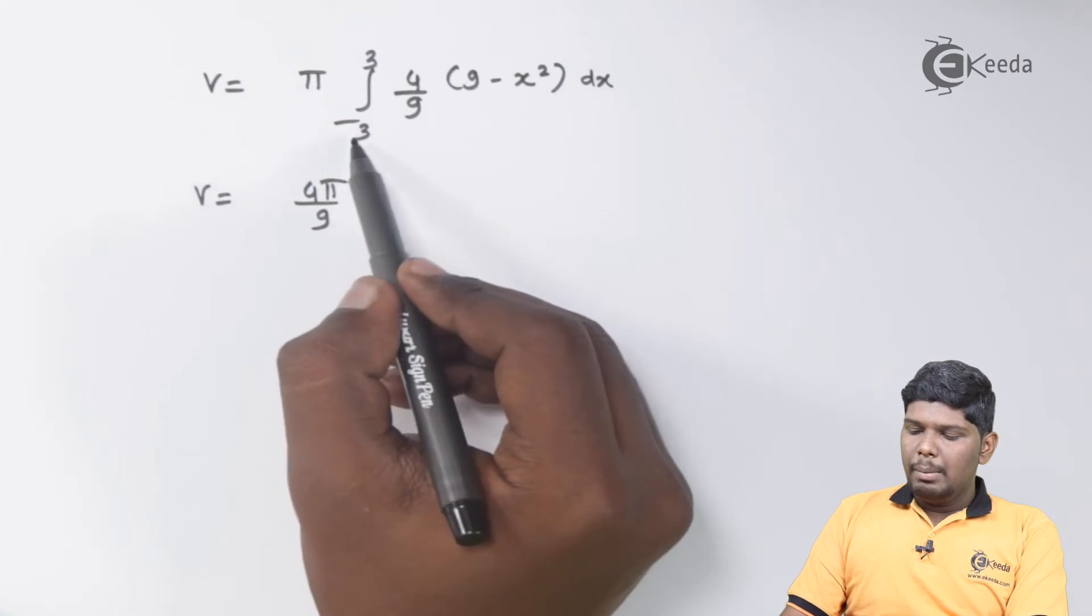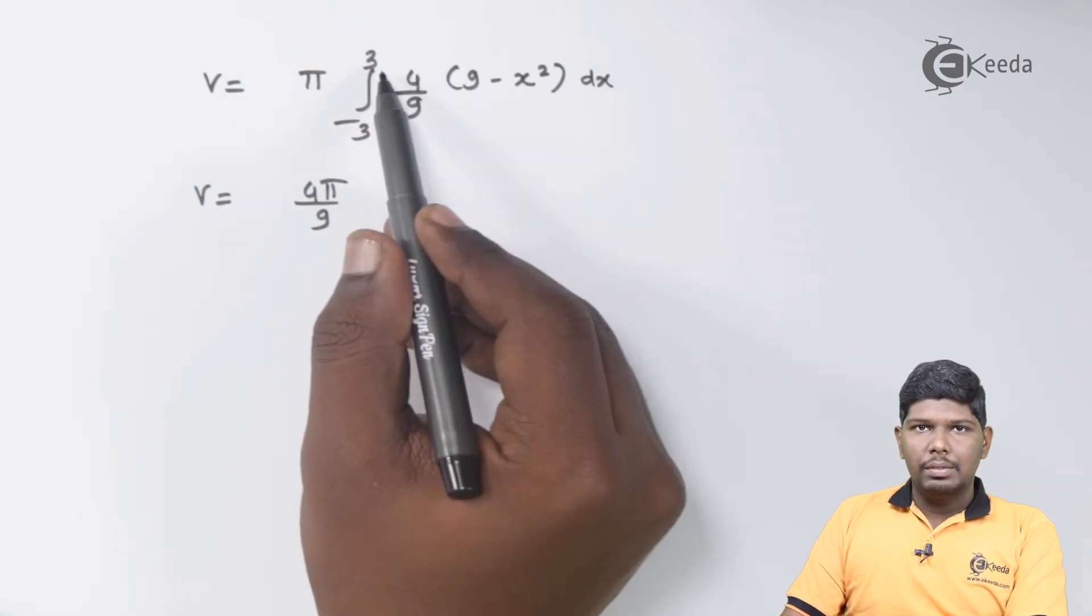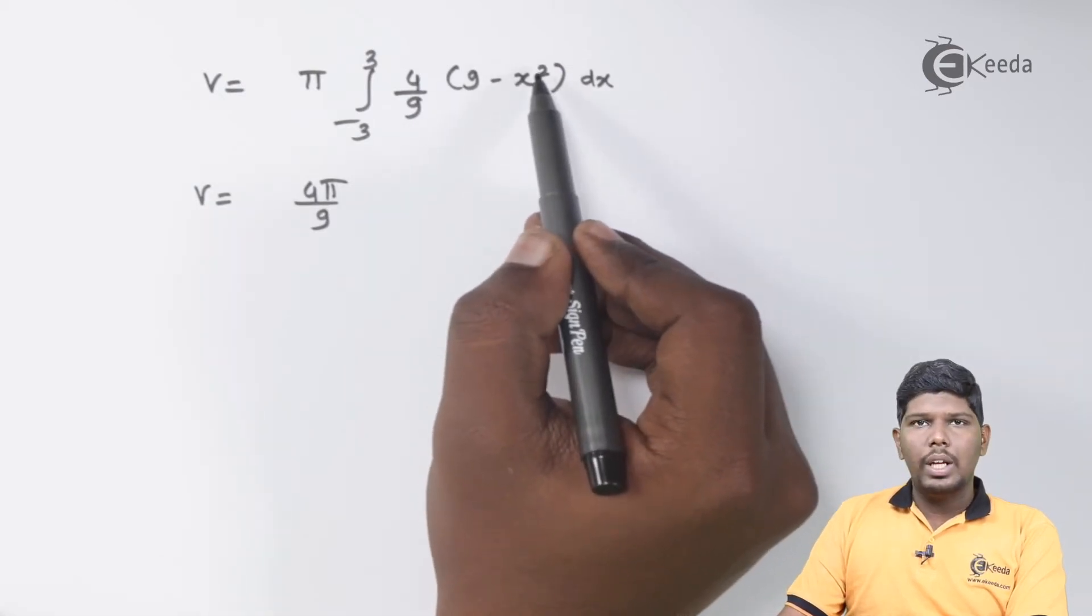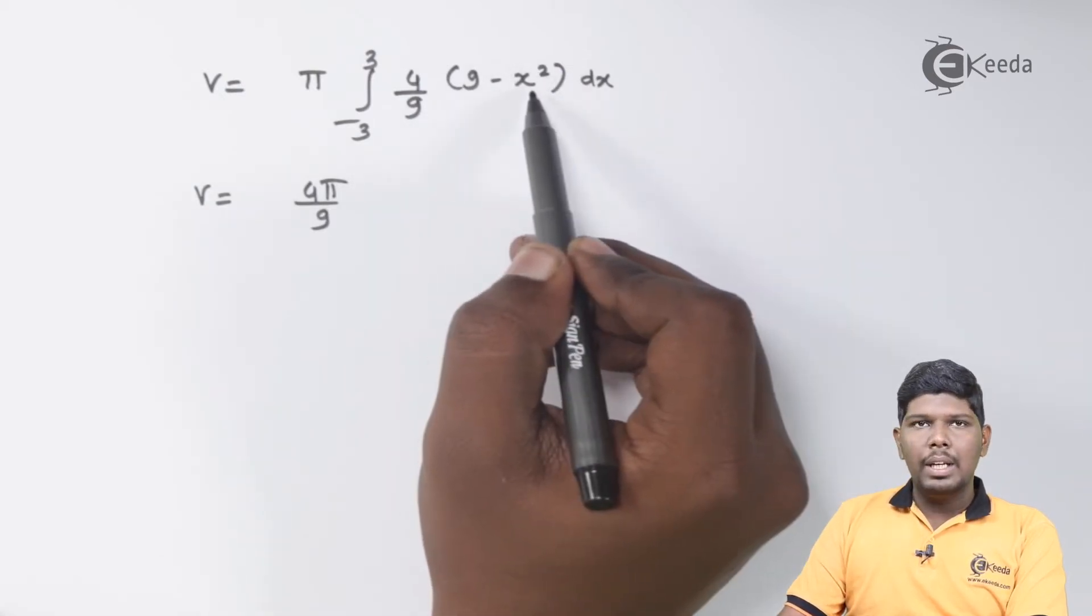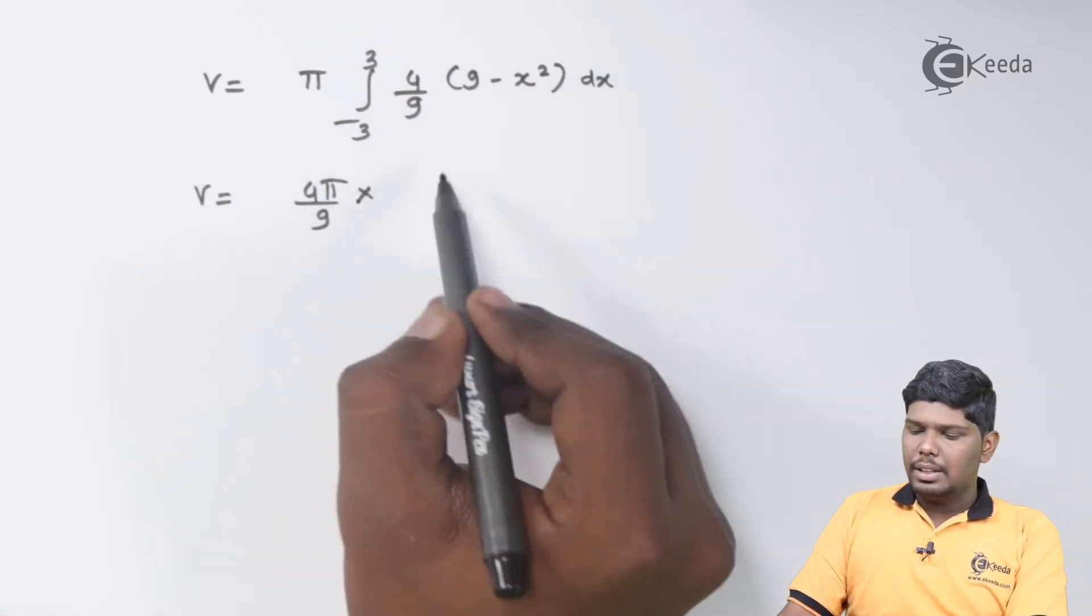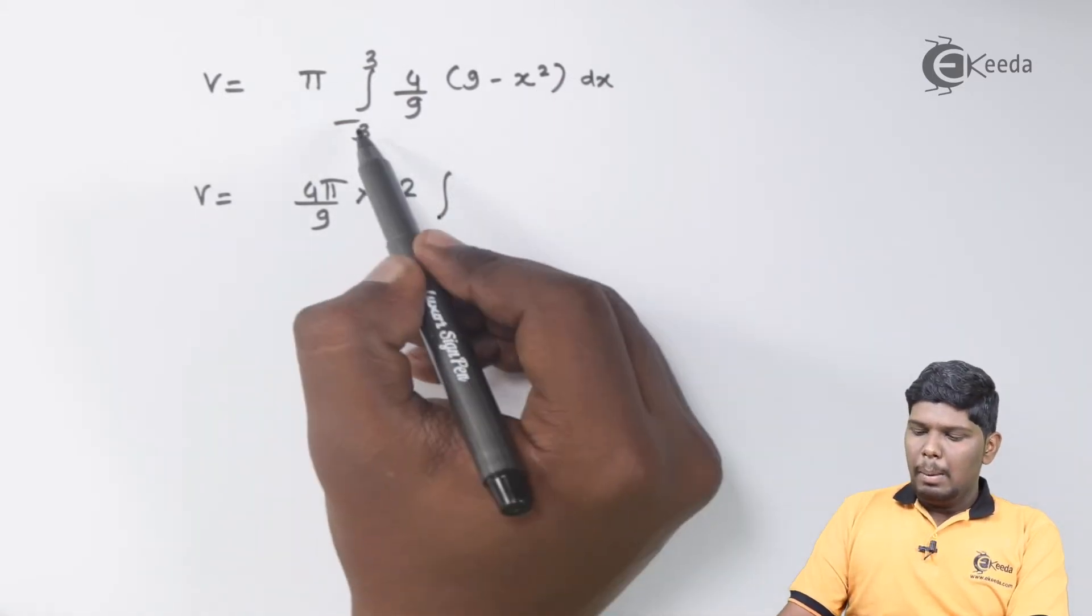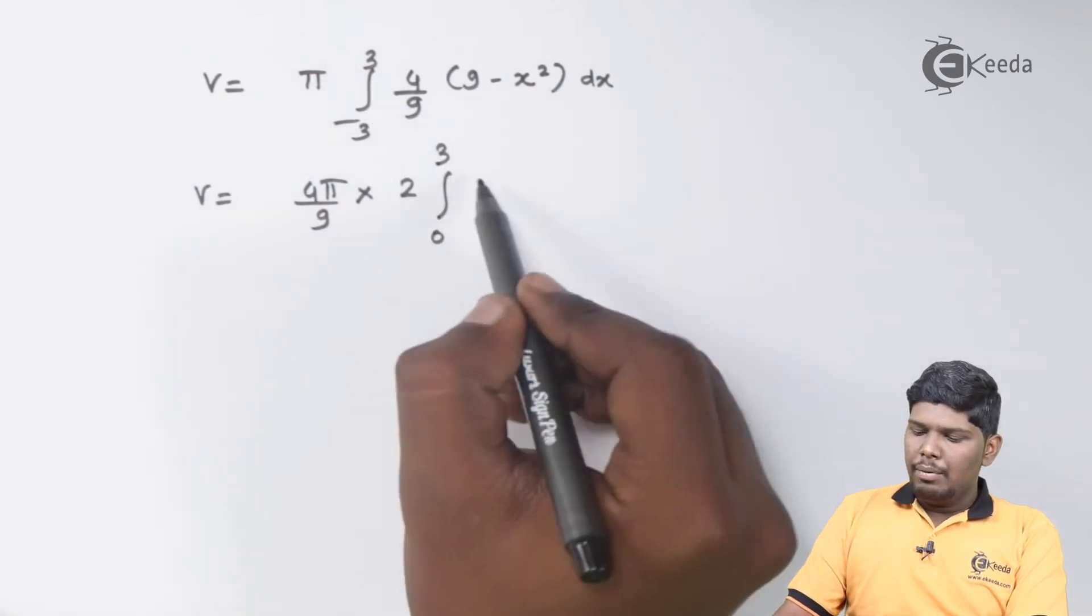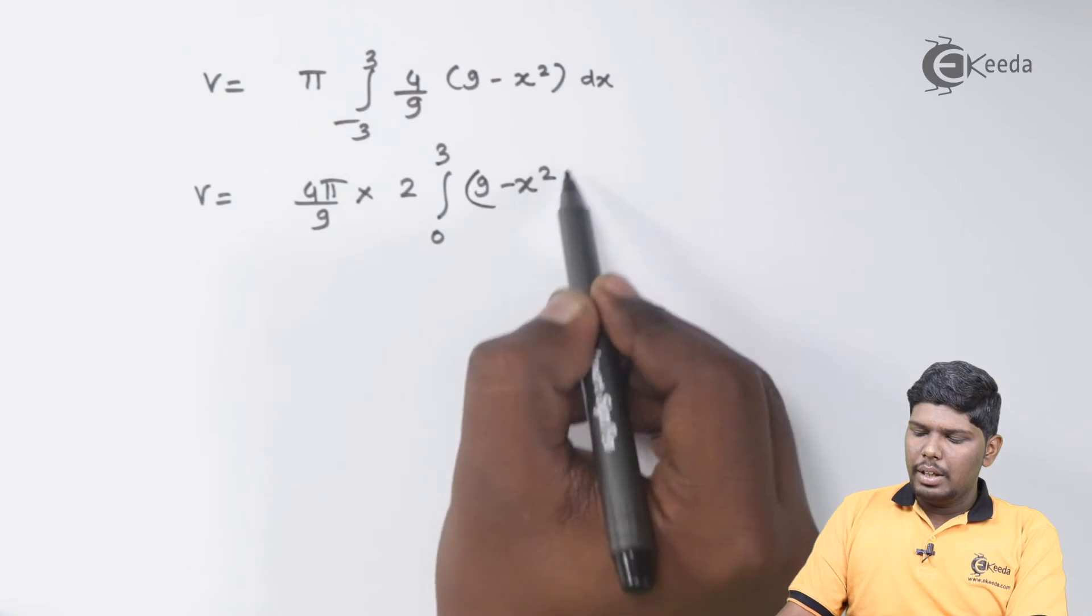Now as you can see, the limits are in the form of minus a to plus a. So we need to check whether it is an odd function or even function. You can simply see x² is an even function. Therefore, 9 - x² will also be an even function. So you can directly split it as 2 times integral from 0 to 3 of 9 - x² dx.